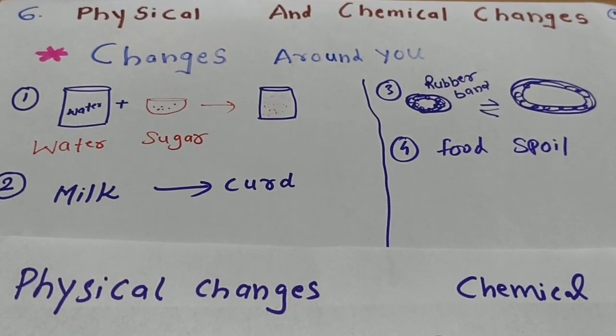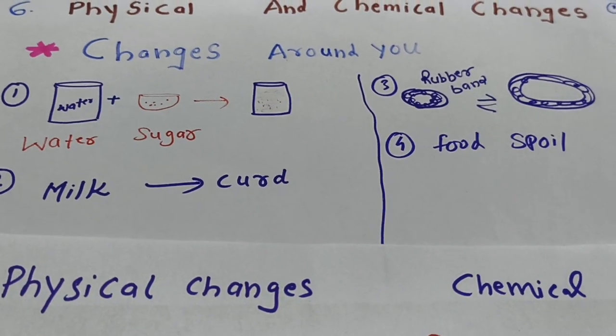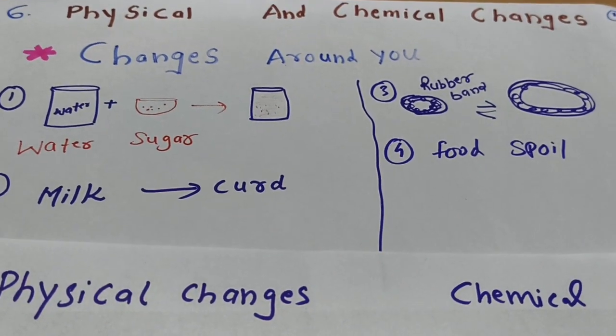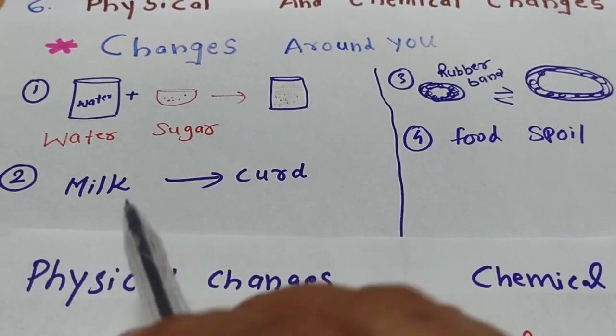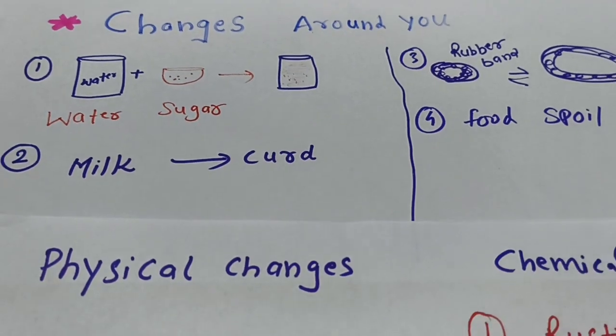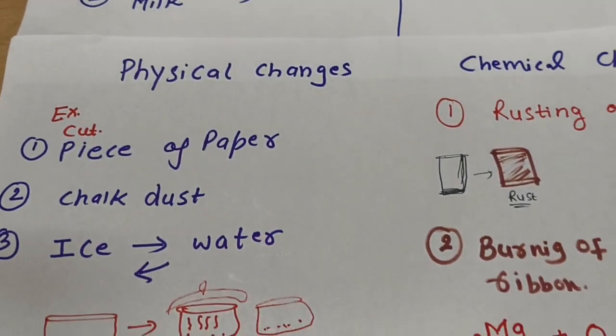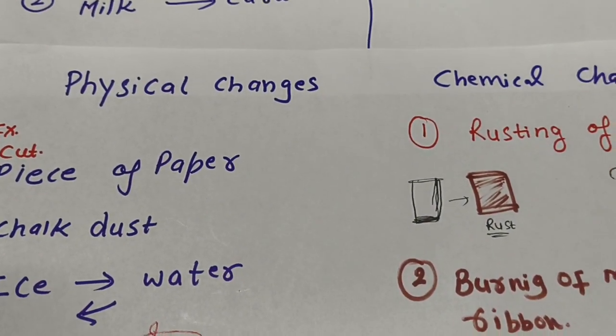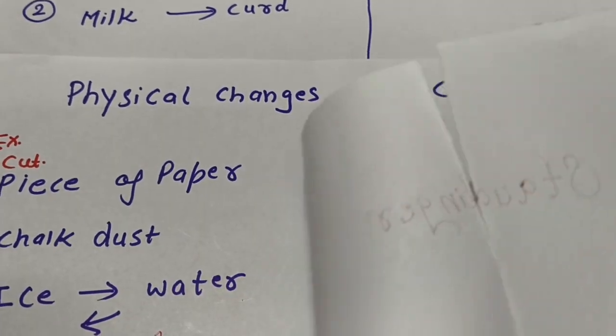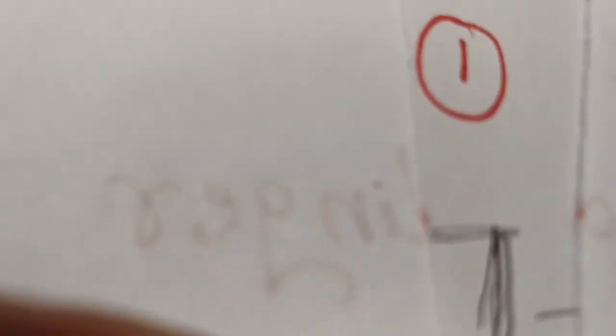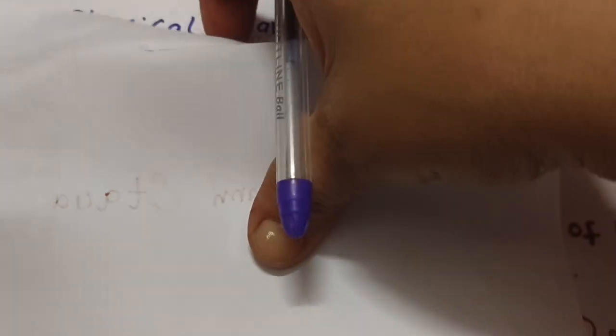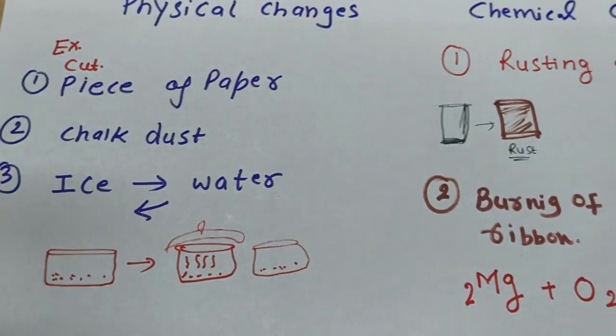Before we understand physical and chemical changes further, let's look at some examples. If you have a piece of paper and cut it into two parts, you can tape it back together. That is a physical change. Similarly with chalk dust powder, you can collect it and make the same shape again.